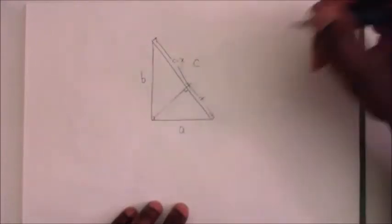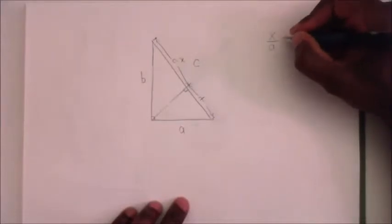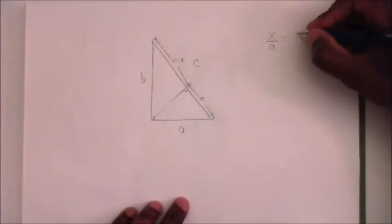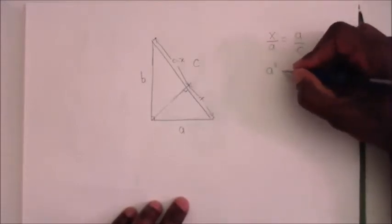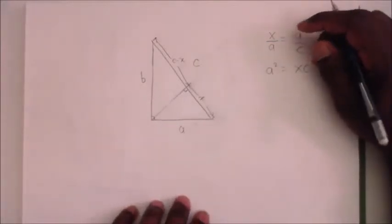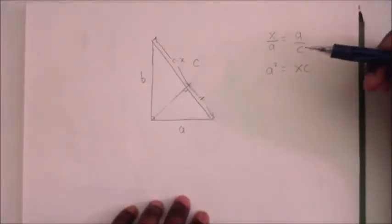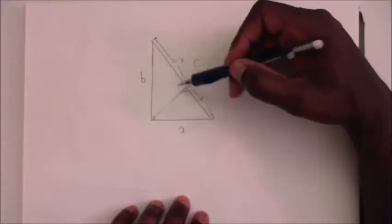So here we can say now X over A is equal to A over C, or in this case A squared is equal to X C.